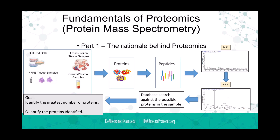From the mass spectrometer we get two different pieces of information. First, the MS1 spectra, where each individual peptide has a different signal. Then we isolate each of those signals and hit them with energy to get the MS2 spectra. The MS2 is really like a fingerprint of each individual peptide. Once we have those MS2 spectra, we can determine the identity of our peptides through a database search against the possible proteins in the sample.